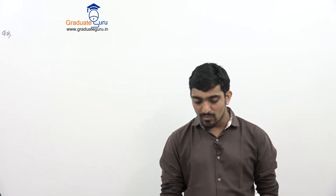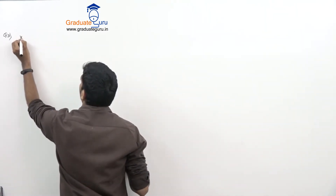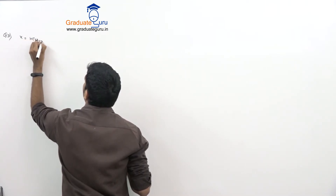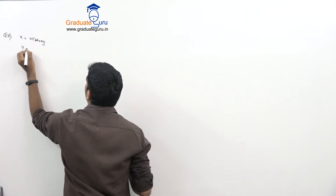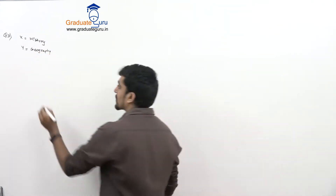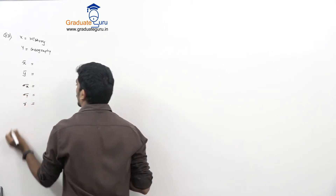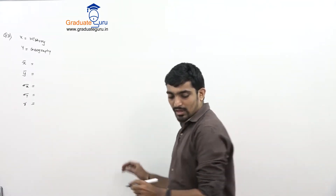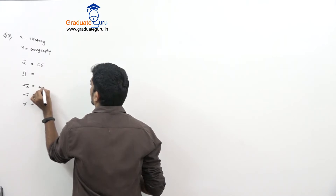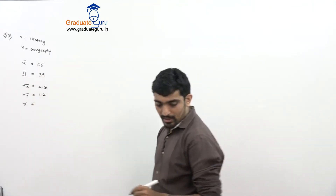Average marks in history is 65, standard deviation of marks in history is 4.3, average marks in geography is 39, standard deviation of marks in geography is 1.2, and coefficient of correlation is 0.75. Let marks in history be represented by x and marks in geography by y. So x-bar = 65, y-bar = 39, sigma x = 4.3, sigma y = 1.2, and r = 0.75.